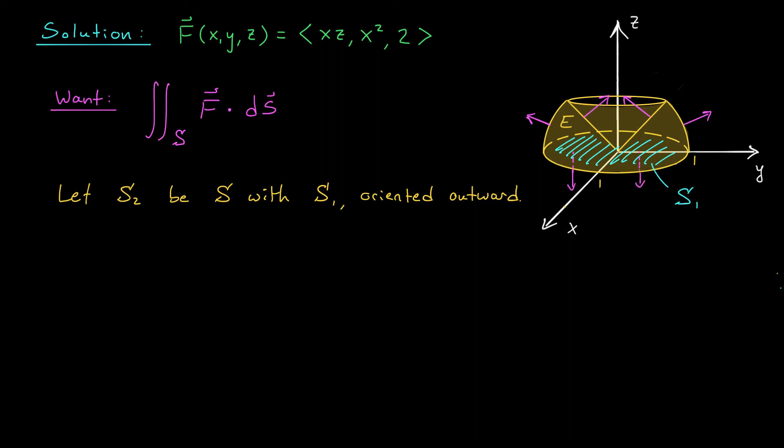Let's now compute the surface integral over the entire surface S₂. Since we're dealing with a closed, outward-oriented surface, we can use the divergence theorem. By the divergence theorem, the surface integral over S₂ of F dot dS is really the triple integral over the solid E of the divergence of F dV.